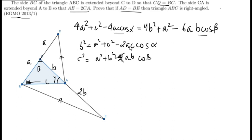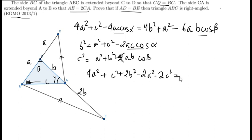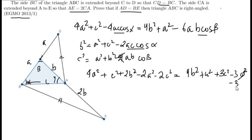We can eliminate terms using the cosine rule in triangle ABC: b² = a² + c² - 2ac·cos α, and c² = a² + b² - 2ab·cos β. Substituting and rewriting, the equation becomes: 4a² + c² - 4ac·cos α = 2b² + 2b² - 2a² - 2c². Multiplying through and collecting terms gives 3c² - 3a² - 3b².